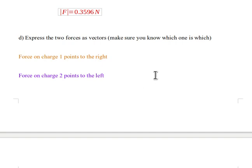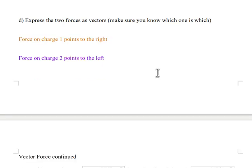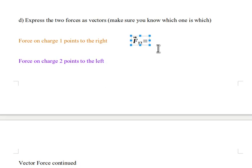Now the way we keep track of these two forces in terms of them being vector signs is we represent the force on charge 1 due to charge 2 as F12, and the force on charge 2 due to charge 1 is F21.